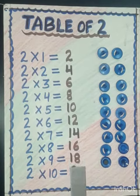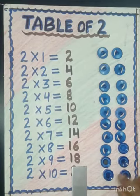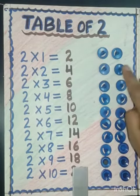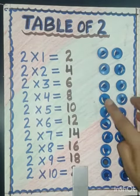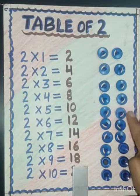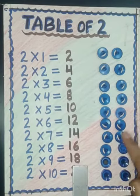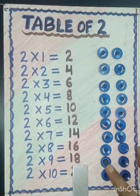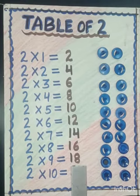Two tens are — again we will add two. Let's count: 1, 2, 3, 4, 5, 6, 7, 8, 9, 10, 11, 12, 13, 14, 15, 16, 17, 18, 19, 20. So two tens are 20.